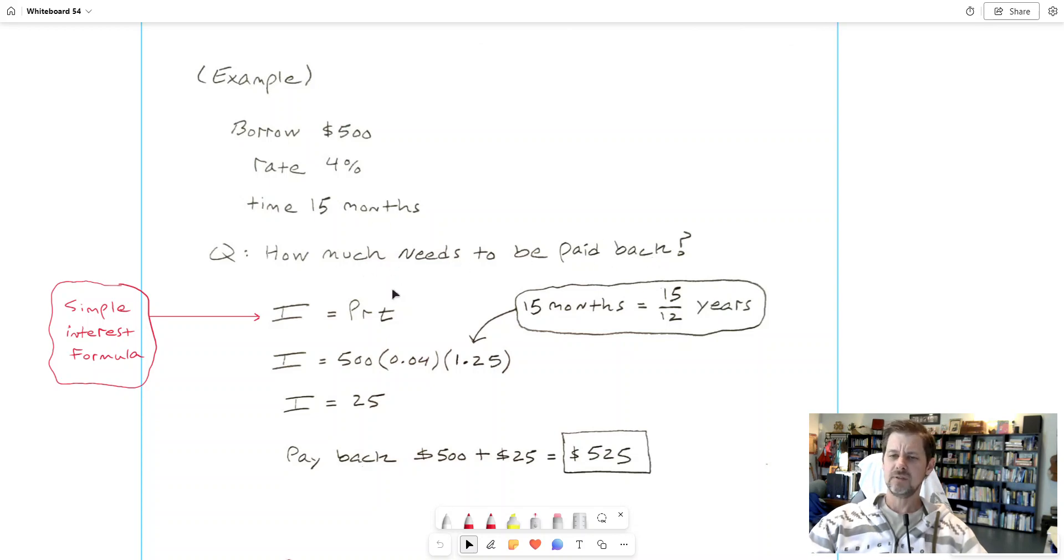So my question to consider to start this new topic is how much needs to be paid back. Here's our simple interest formula: interest is principle times rate times time. Principle 500, rate 4%, time is 15 months. But one catch with the simple interest formula, at least as we're going to encounter it in our assignment, time needs to be in years. So 15 months is 15 divided by 12 years, and if you want to get that as a decimal that's 1.25 years, one and a quarter years.